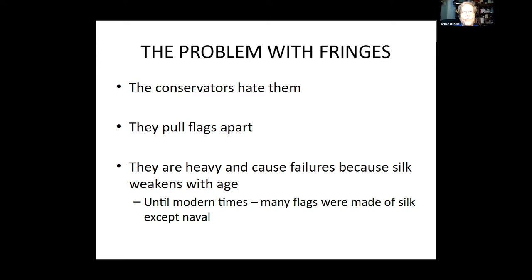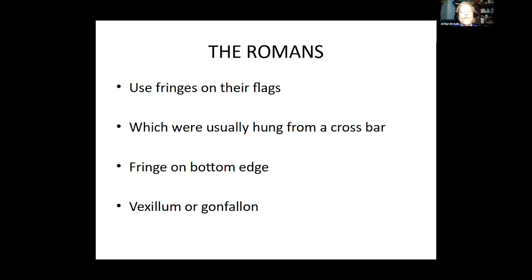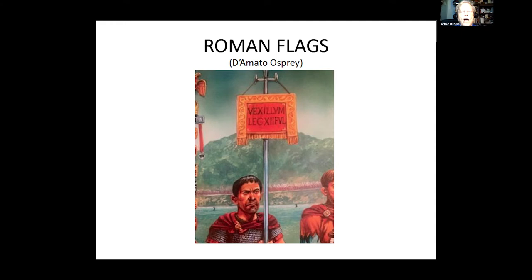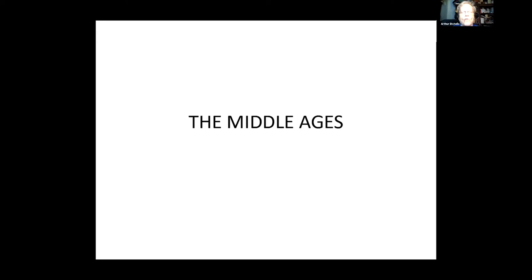So where did fringes come from? We saw fringes on Roman flags — they were usually hung from a crossbar, with a fringe on the bottom edge. There are lots of pictures of these things, but we have no written documentation about why, just that they were. So let's go to the Middle Ages, which are fairly well recorded.